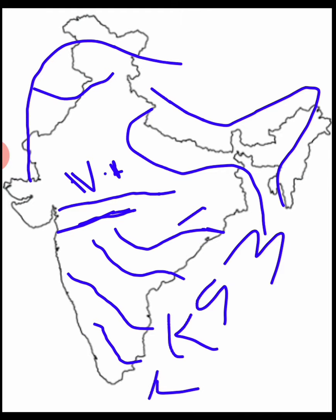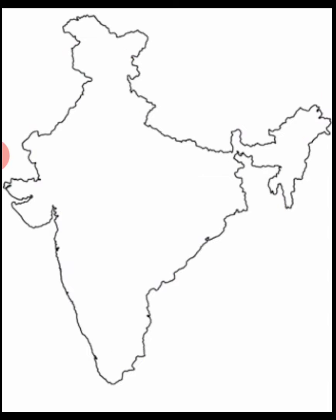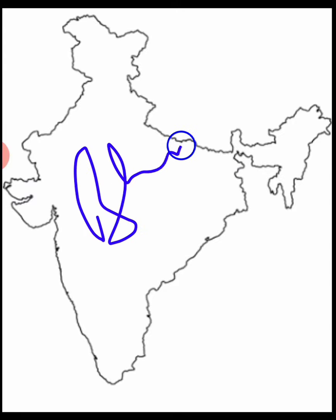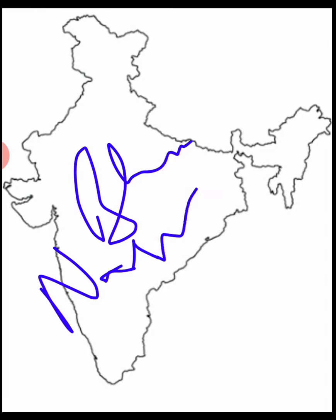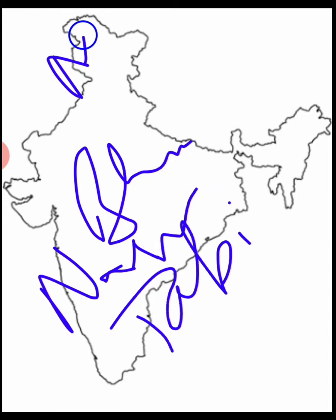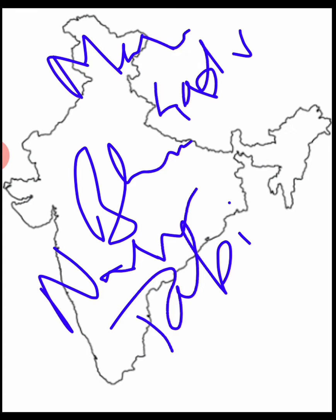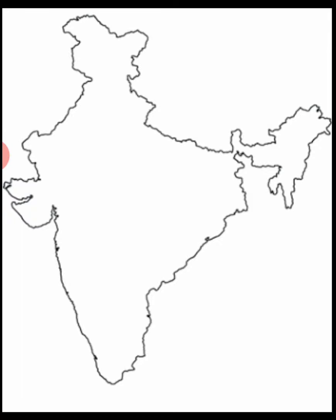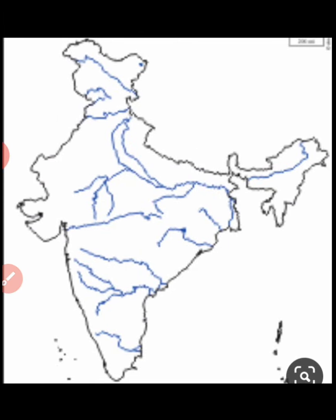I hope, students, you have understood the river system well. Please remember the location of each river — where it starts and where it ends. This covers all the major rivers of India: Indus, Ganga, Brahmaputra, Narmada, Tapi, Mahanadi, Godavari, Krishna, and Kaveri.